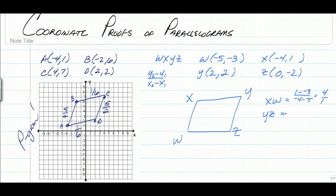Now we're going to find YZ. We have negative 2 minus 2 over 0 minus 2. That's going to give us negative 4 over negative 2. Therefore, we already see that these are not parallel, which means this is not a parallelogram.